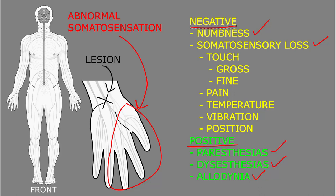Somatosensation can be quickly screened by touch, or examined in more detail for the other primary modalities — the different kinds or types of somatosensation. Touch sense is often separated into gross touch sense and fine touch sense. Gross touch perception is usually poorly localized to a large area, while fine touch sense localizes to a small area, such as distinguishing between two points applied very close together on the skin. This distinction matters because fine and gross touch sense usually travel in different tracts in the central nervous system, which may help localize a lesion.